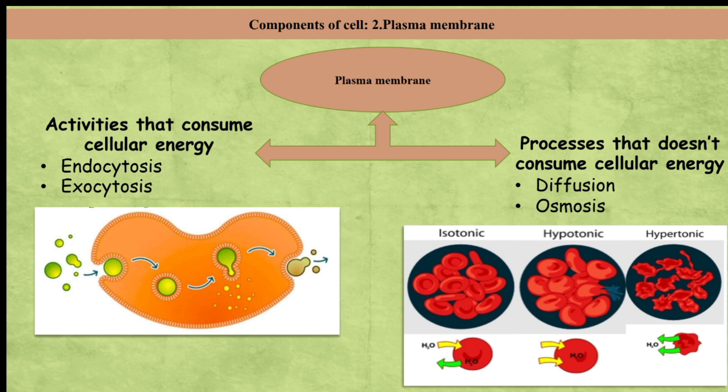Diffusion means the entry or exit of small molecules like oxygen and carbon dioxide. Osmosis is the movement of water from a part with more water to a part with less water through a selectively permeable membrane. It is a physical property with three possibilities. First is isotonic solution — here the medium outside and inside the cell has the same proportion of water, therefore water doesn't go in or out.